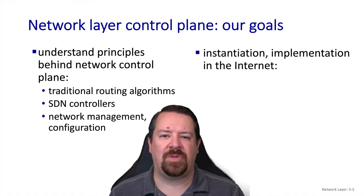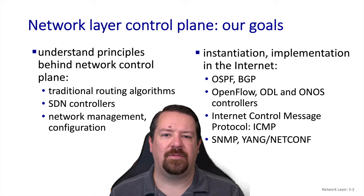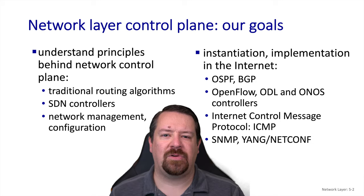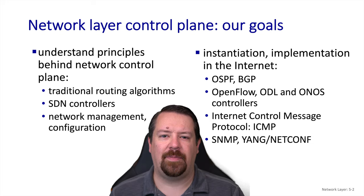Then, as with other layers we've looked at, we'll look at the specific instantiations and implementations of protocols used in the Internet. For traditional routing protocols, we'll look at OSPF and BGP. And for SDNs, we'll look at the OpenFlow protocol, as well as the ODL and ONOS controllers. We'll also talk in more detail about ICMP, and wrap up by looking at some network management protocols.